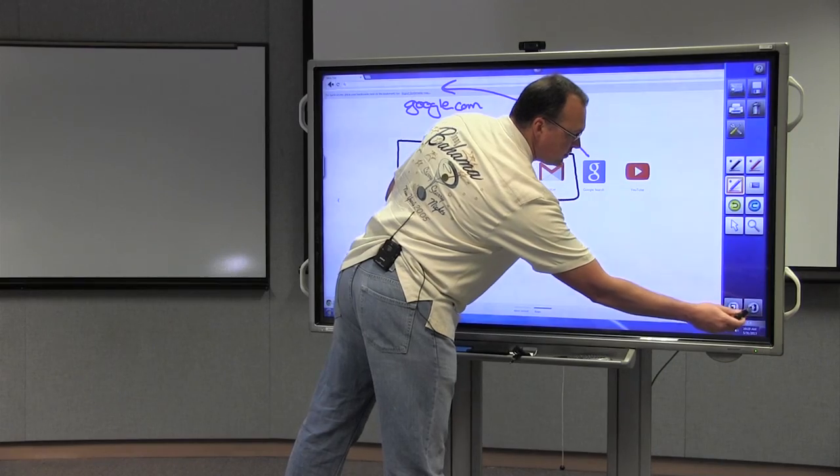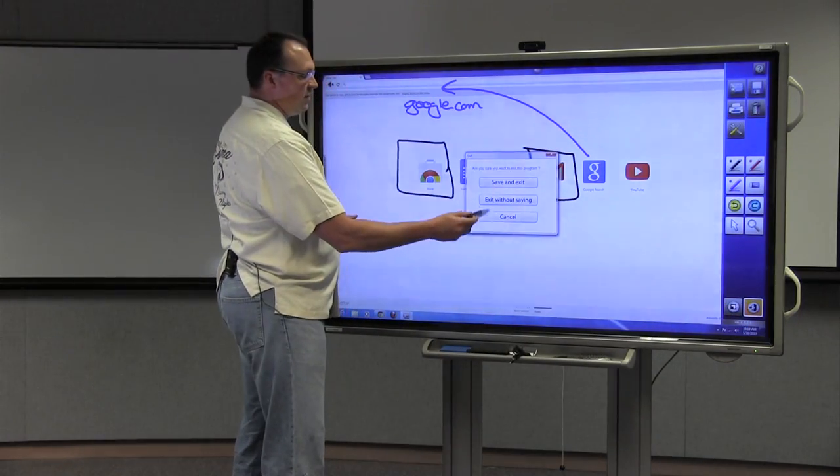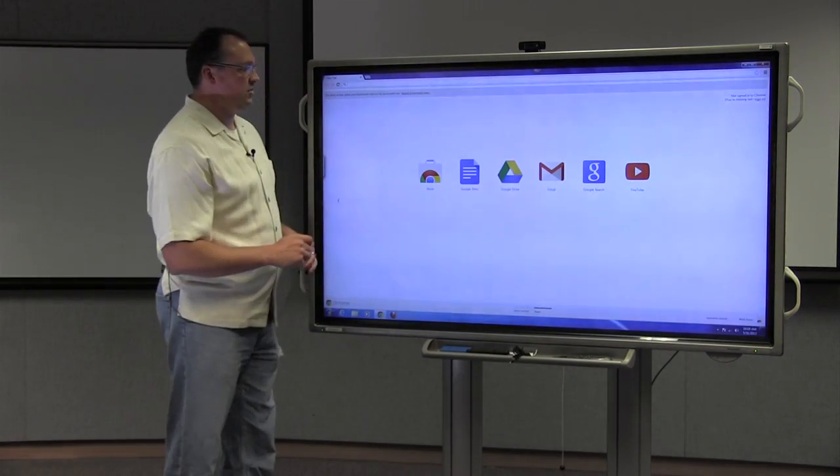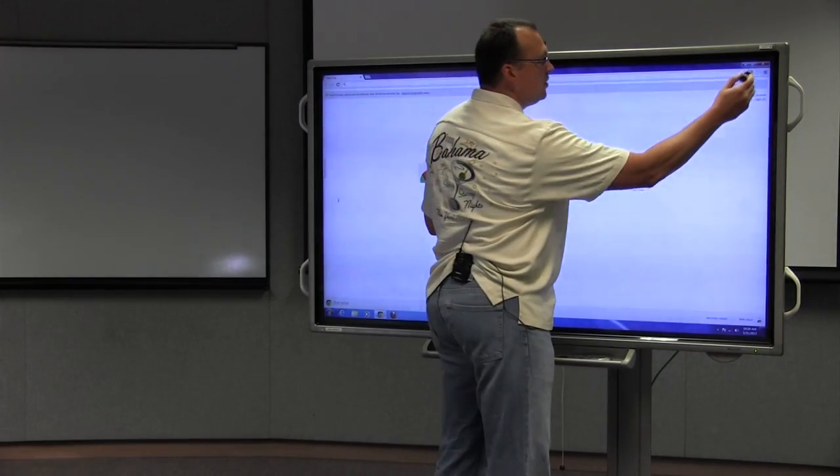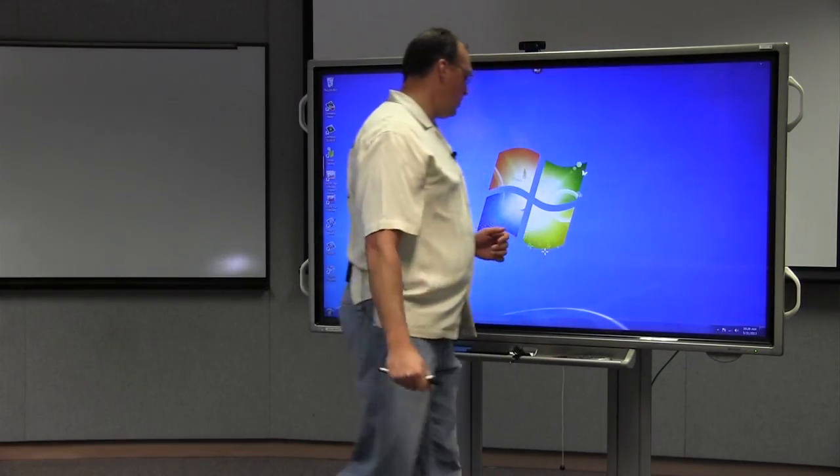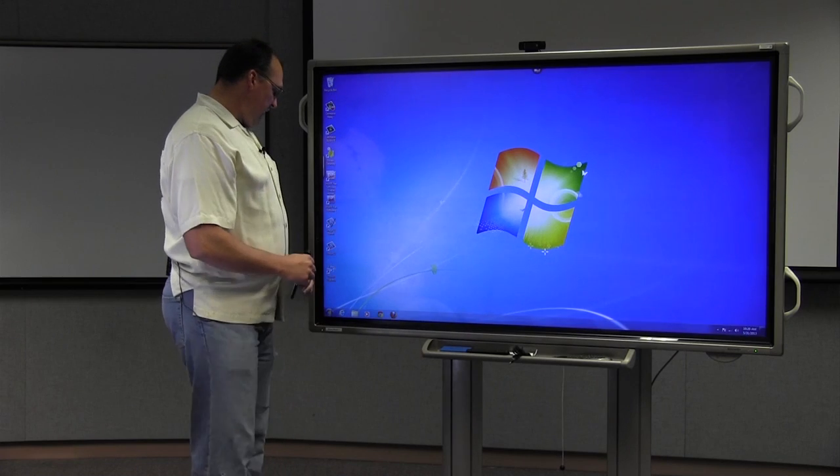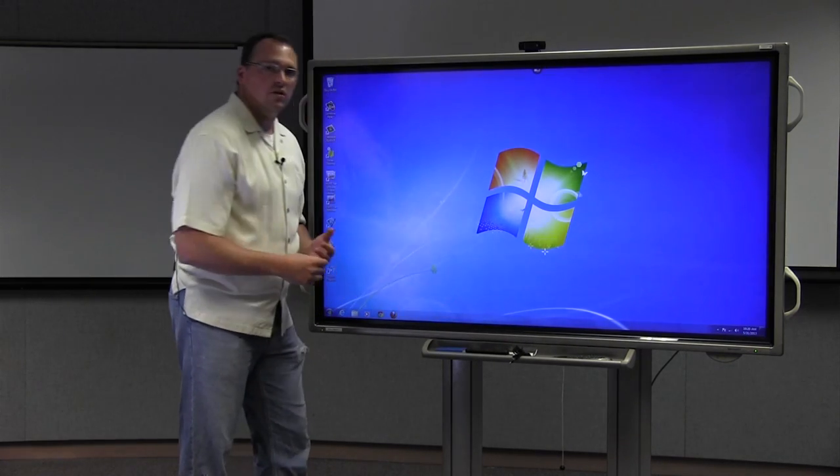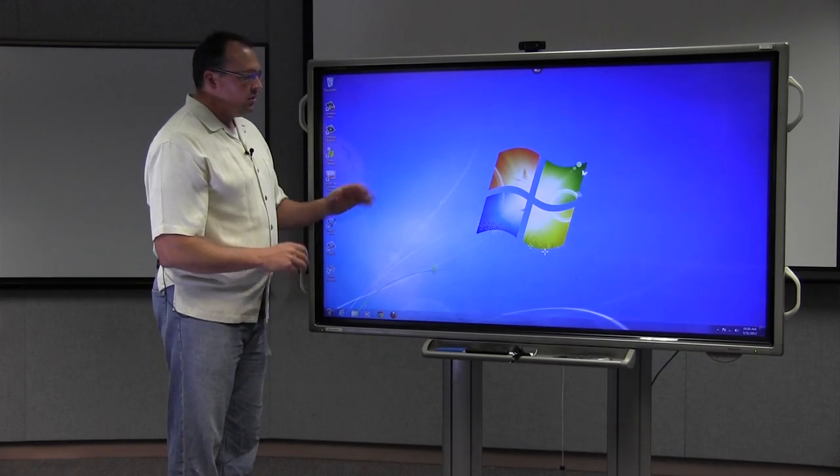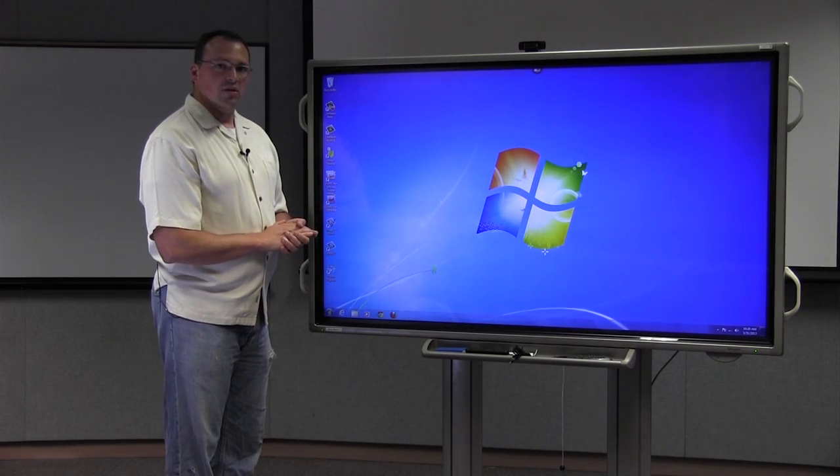To exit out again, click the open door. It's going to ask if we want to save. We're not going to save this one. We're going to get rid of it. And then we also have our web page. We'll close that, and we're back to this. So again, we're operating within a Windows 7 operating system, but this is just one thing that the board can do.